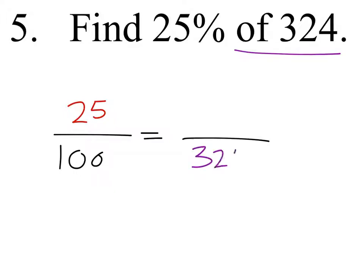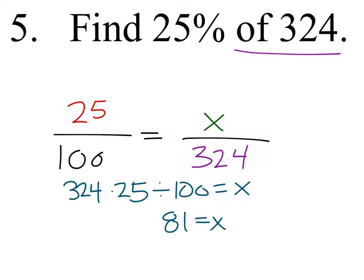I am going to use a percent proportion. It always has 100 right here. And this one gave us 25%, which always goes over the 100. And it's of 324. Of is the denominator, so it's going to be 324 right here. And we're going to be solving for the number above it. Using fishing method, it appears that 81 is 25% of 324.